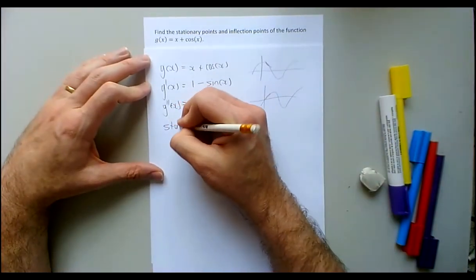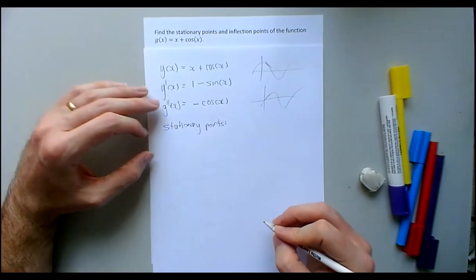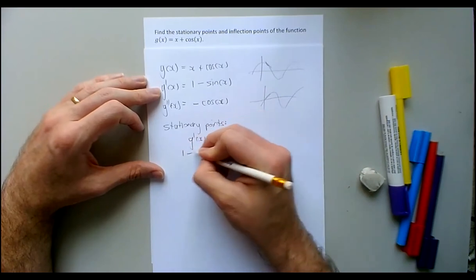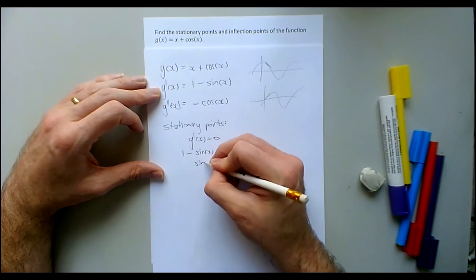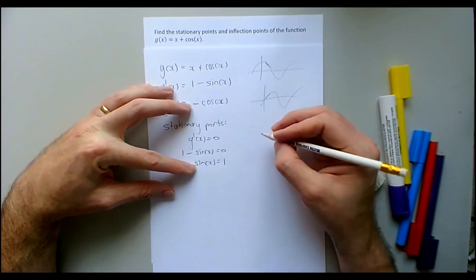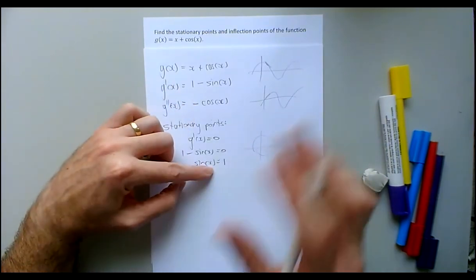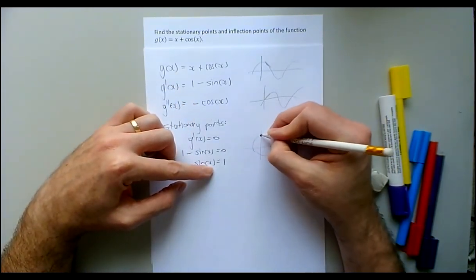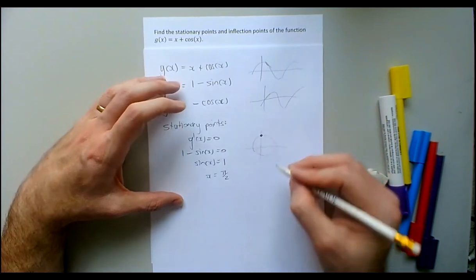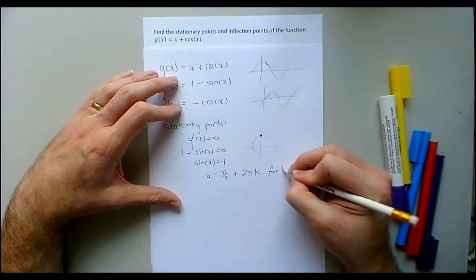To find the stationary points I need to find when the first derivative is zero: 1 - sin(x) = 0, which means sin(x) = 1. On the unit circle, sin(x) = 1 exactly at x = π/2, and any multiple of 2π away gives the same answer. So the stationary points are at x = π/2 + 2πk, where k is an integer.